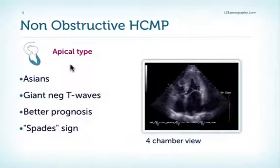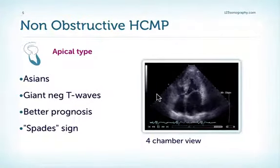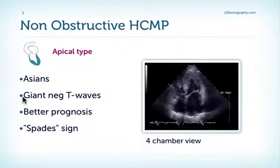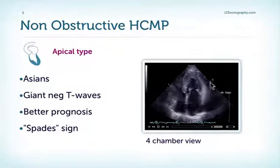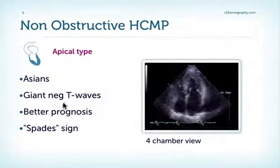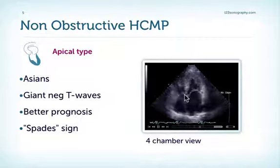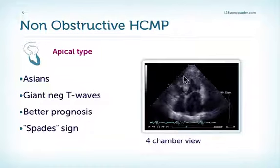Now let's take a look at the apical type of non-obstructive hypertrophic cardiomyopathy. It is a pathology which is more common — actually not infrequent — in the Asian population. It is characterized on ECG by the so-called giant negative T-waves. In general, it has a better prognosis than other forms of hypertrophic cardiomyopathy. The typical echocardiographic finding is hypertrophy of the apex, where the ventricle has the shape of a spade — the spade sign of apical hypertrophic cardiomyopathy. Note that we have significant left ventricular hypertrophy, which is more prominent the further we get to the apex.